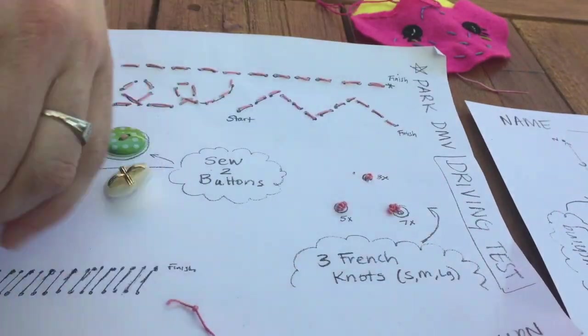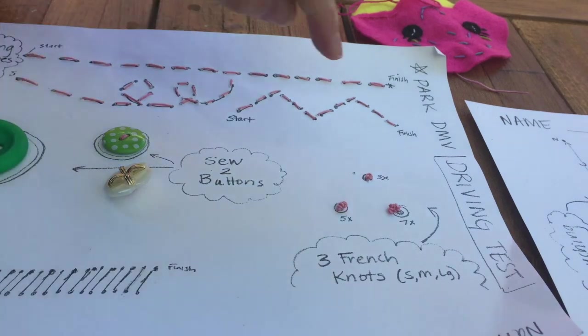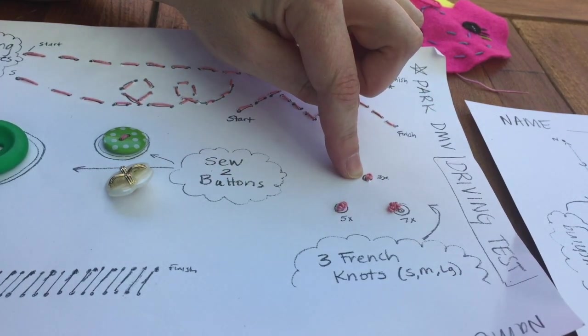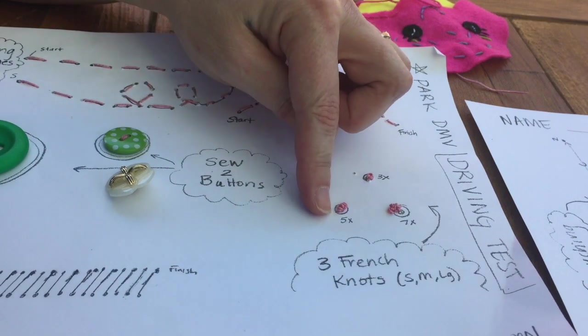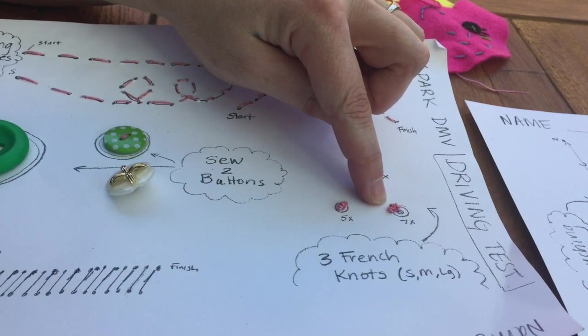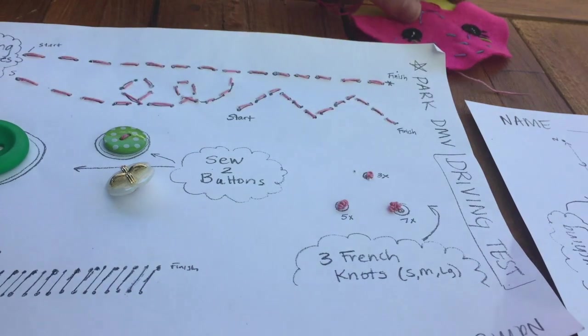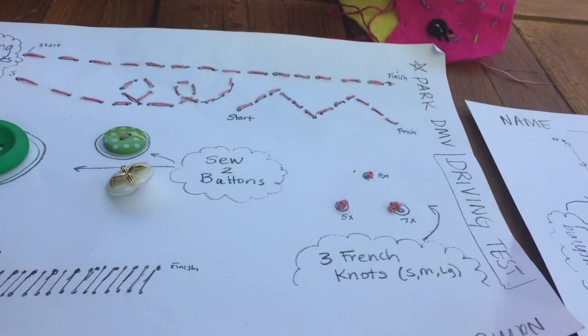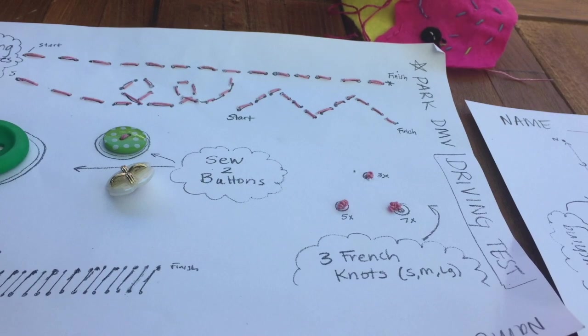Now I already made some French knots, and I have three different kinds: one made by wrapping it three times, one by wrapping it five times, and one by wrapping it seven times. You can see that these might be used for something on your stuffy that is a small detail.